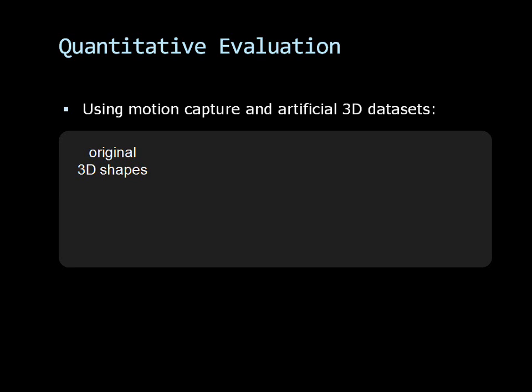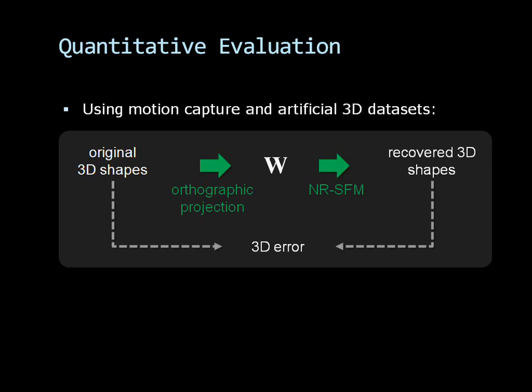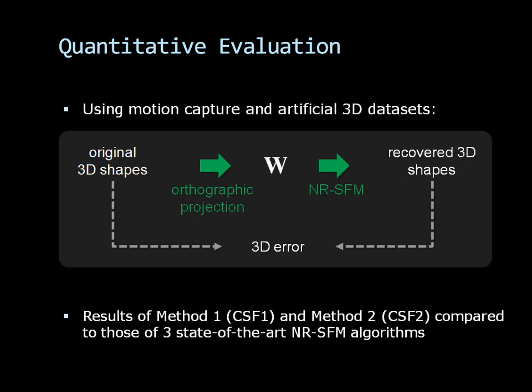To evaluate our methods, we first used motion capture data and artificial 3D data sets. The original 3D shapes were projected to 2D to produce an observation matrix W. Then, a non-rigid structure from motion algorithm was applied and the recovered 3D shapes were compared to the original shapes. The results of the two methods were compared to those of three state-of-the-art non-rigid structure from motion algorithms.